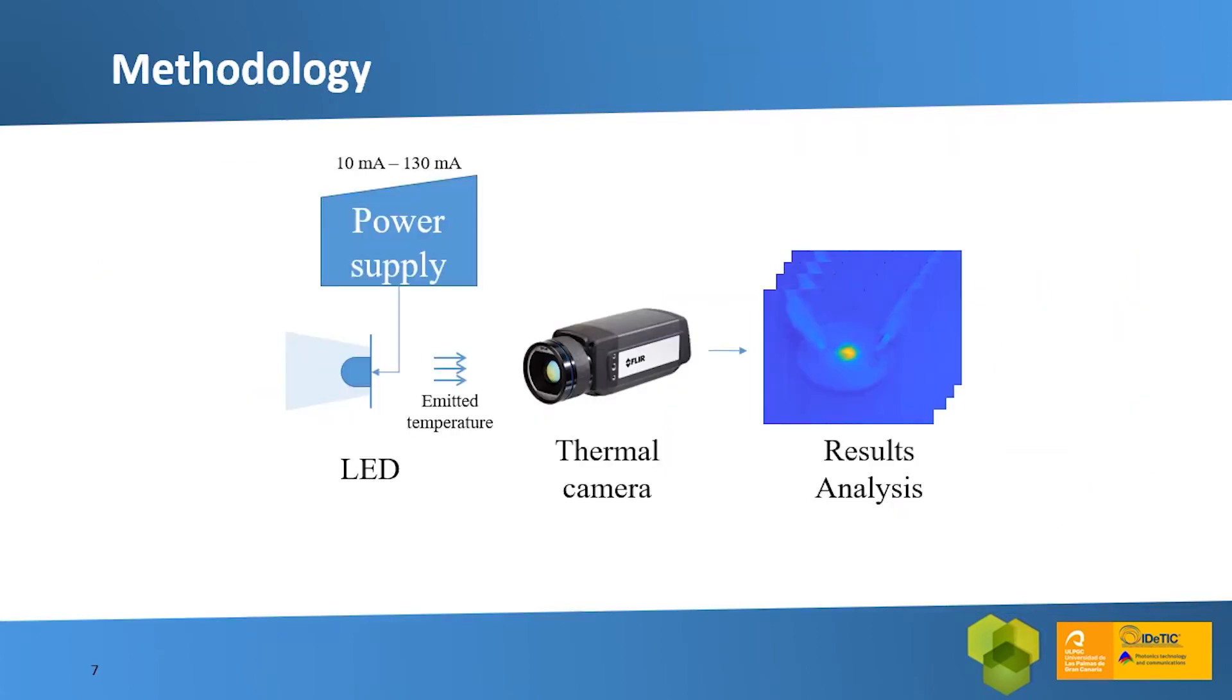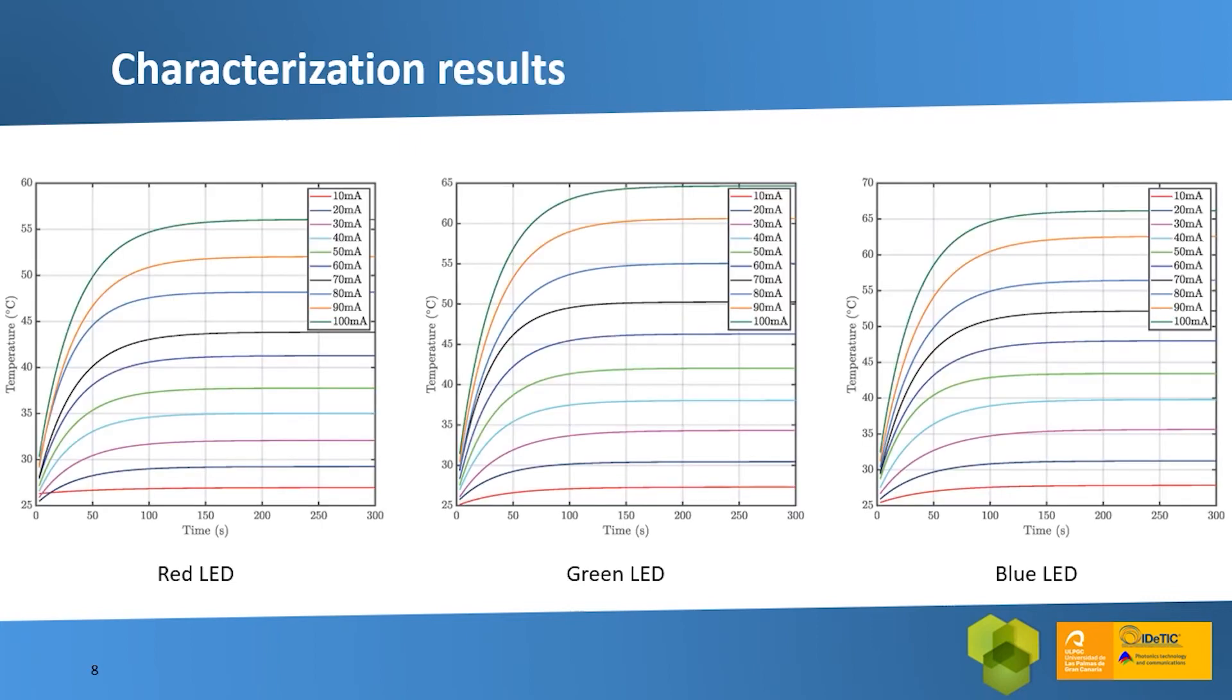In order to achieve this objective, first we characterized the LEDs under test and checked how temperature affects their spectrum. This characterization was carried out by following this scheme. The LEDs were driven using currents ranging from 10 to 130 milliamperes to induce different junction temperatures. Then we used a thermographic camera to measure the maximum temperature of the LED.